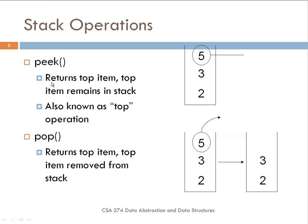The peek operation, also known as top, returns the top item. So if you've pushed some things onto the stack, peek will give you the item at the very top. Pop, on the other hand, also returns the top item — if five is at the top of the stack, it removes it and returns it to the caller. So if I have five, three, and two on my stack and I pop it, I'll be left with just three and two, and five is returned to the caller.